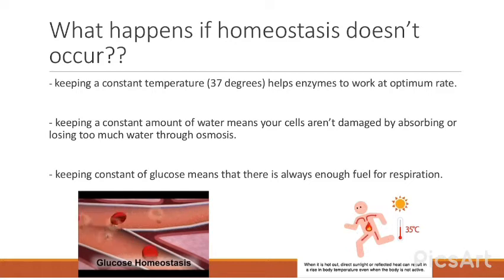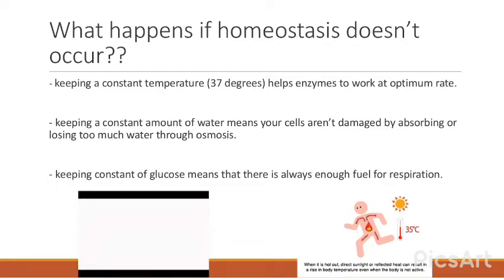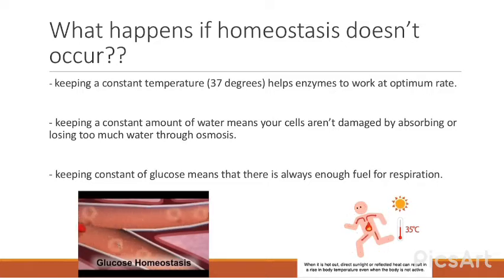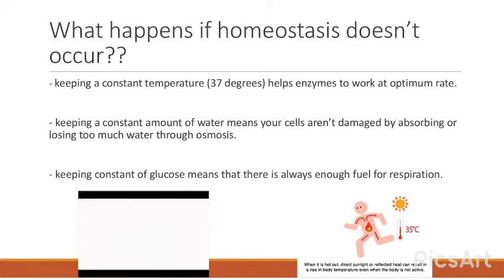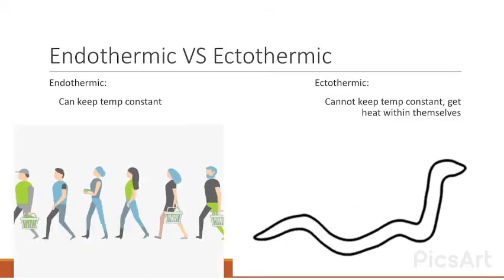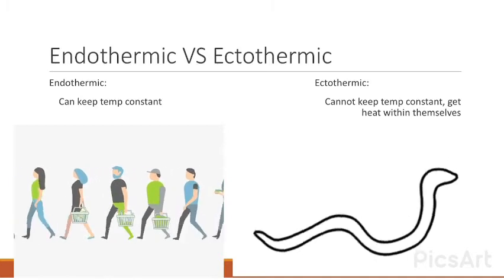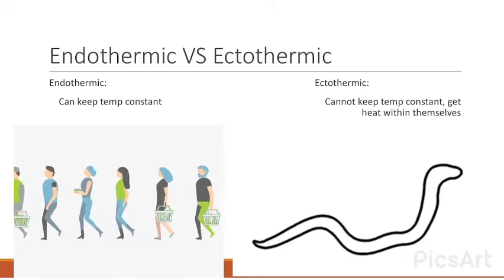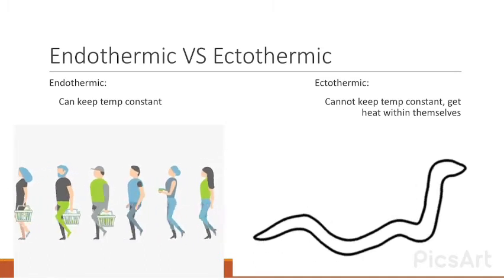What happens if homeostasis does not occur? Keeping a constant temperature of 37°C helps enzymes work at optimum rate. If it's higher than 37°C, enzymes will denature. Keeping a constant amount of water means your cells aren't damaged by absorbing or losing too much water through osmosis. Keeping a constant glucose concentration means there is always enough fuel for respiration.